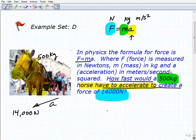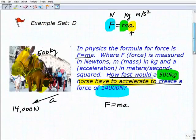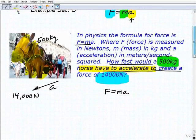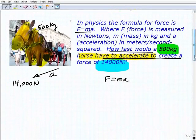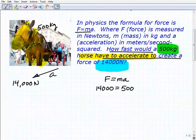Let's go ahead and plug this information in, then we'll solve for acceleration. Force equals mass times acceleration. If you haven't studied this formula in science yet, you certainly will, probably in a physical science class, definitely in physics. We want to be able to create 14,000 Newtons worth of force from a 500 kilogram horse. So this would be 500, that's our mass.